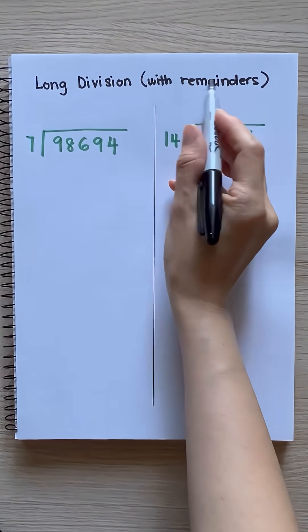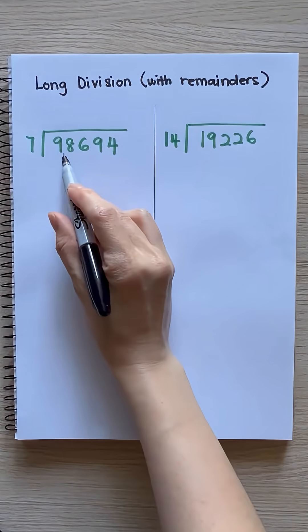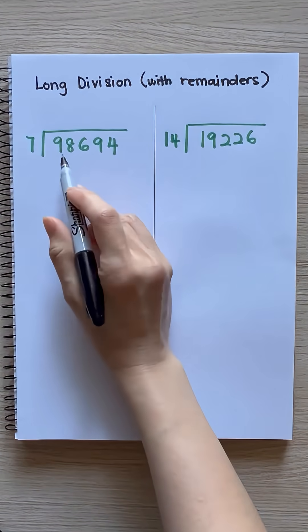Long division with remainders. 98,694 divided by 7.